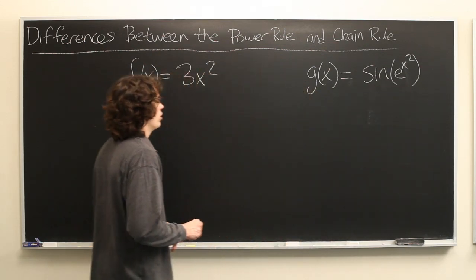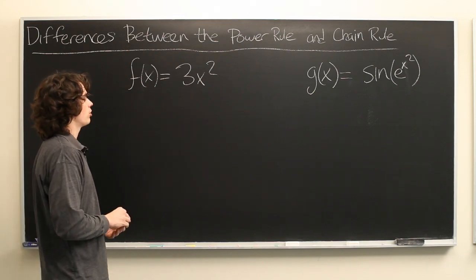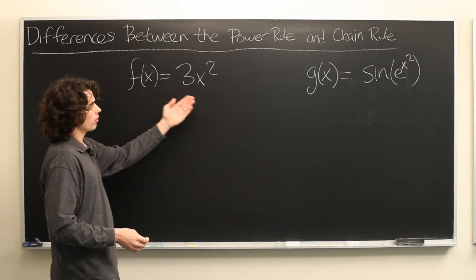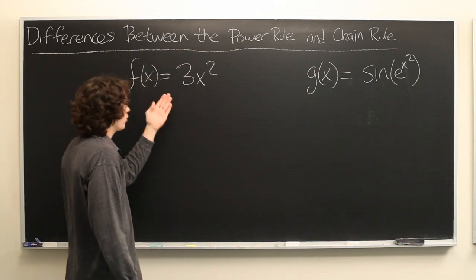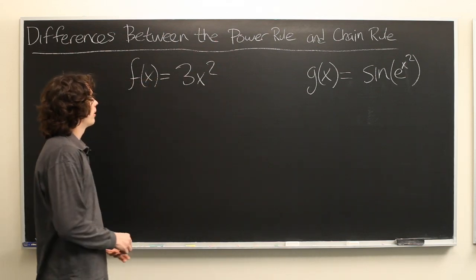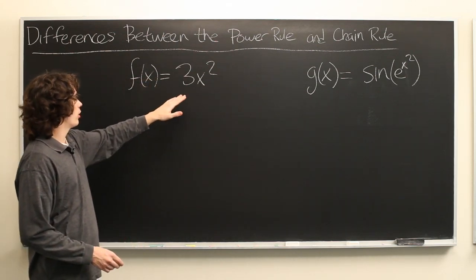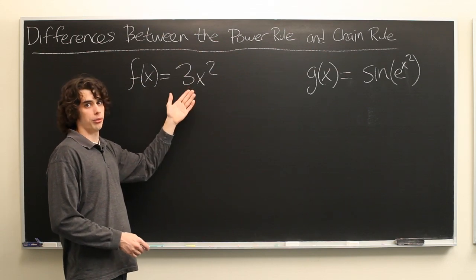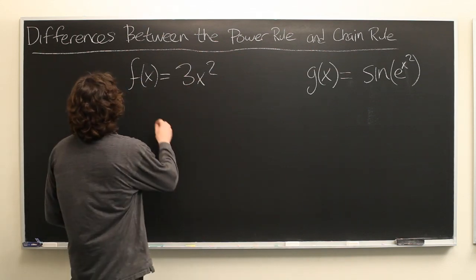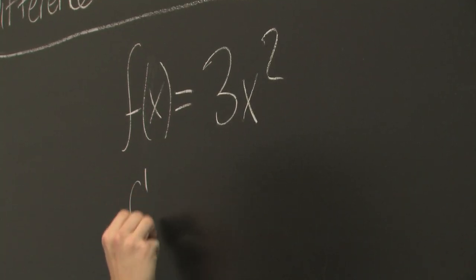And the first question is, which one of these two rules goes with which? Should I use the power rule here or there? Should I use the chain rule here or there? The answer is that the power rule can only be used with polynomial terms. So here is where we'll apply the power rule.